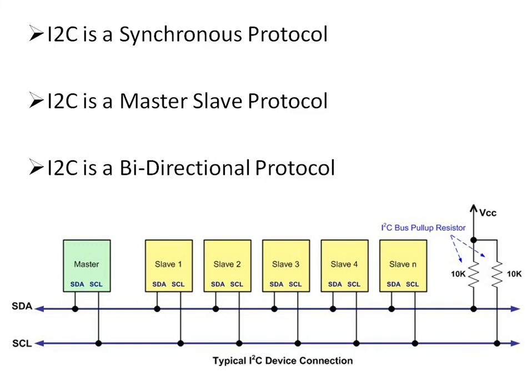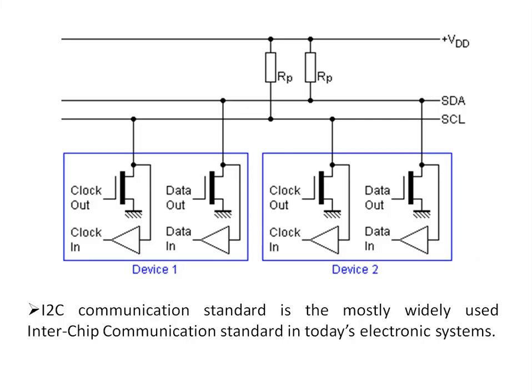I2C is also a bi-directional protocol. Whenever the master is acting as a transmitter it uses the SDA line, and whenever the slave is acting as a transmitter — that is, whenever it is sending the response to the master query — it also uses the same SDA line. So it's a bi-directional protocol.